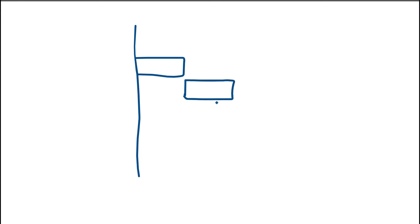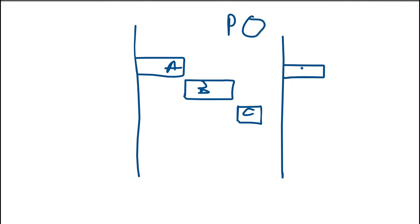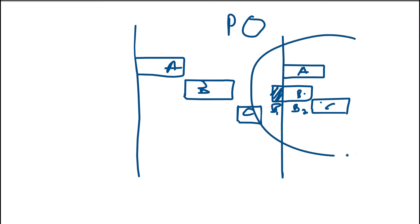Now let's consider the same scenario with activity A, B, and C, but this time using progress override in P6. Assume activity A has not started, but activity B has started. What will happen now is that the logic will not be respected anymore — the progress will be overridden. The part of B that has started is B1, and B2 is the remaining part yet to be completed. C will still follow the logic between B and C. This is an out-of-sequence activity — B is not respecting the logic between itself and A anymore, and C will follow activity B.